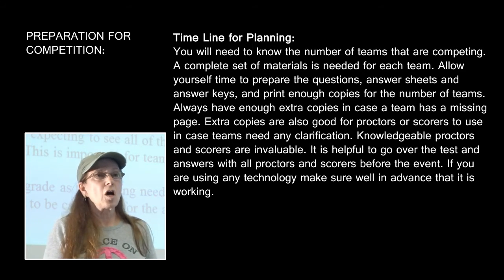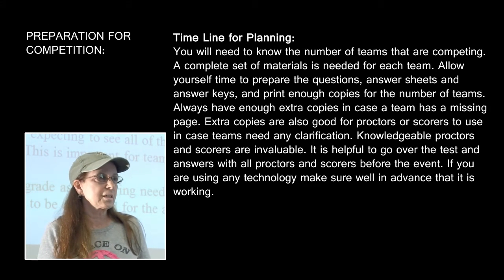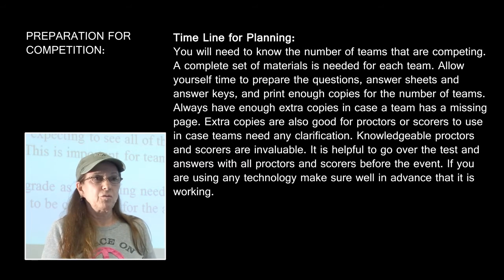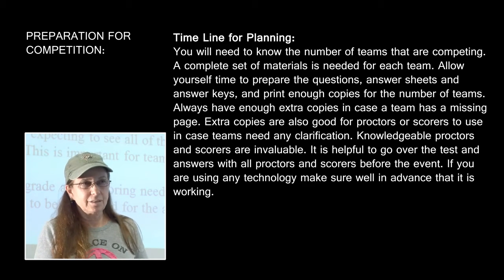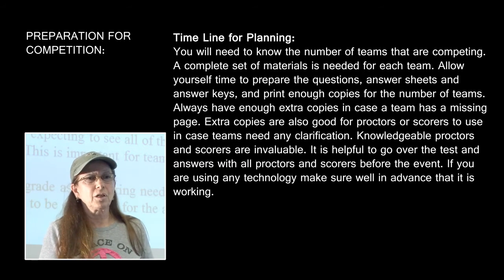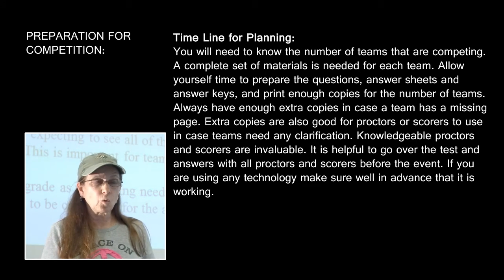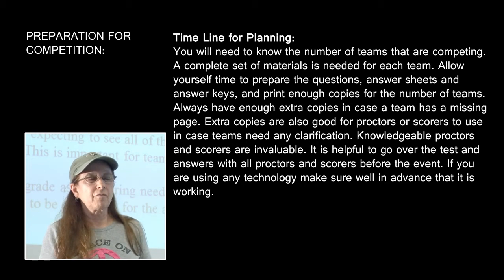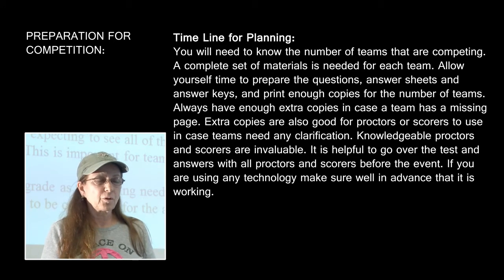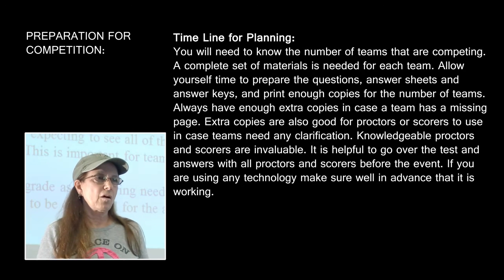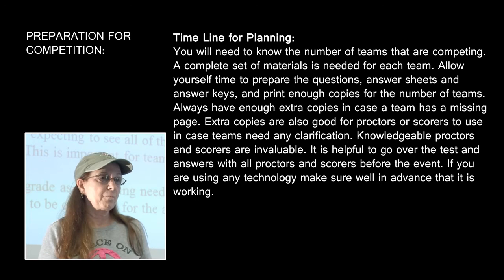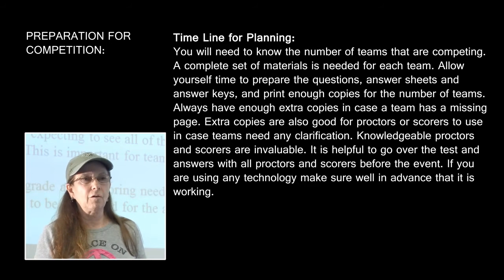Have at least five additional copies for helpers and yourself in case teams have questions. If you can find knowledgeable people — astronomy students, professors, or former Science Olympiad astronomy competitors — you should get together with them. Some will probably be helping with scoring, and the more familiar they are with the event, the more efficient and helpful they'll be. Go over the event with your helpers, walk them through, show them the questions, give them an idea of the answers so they're comfortable and can assist with scoring.